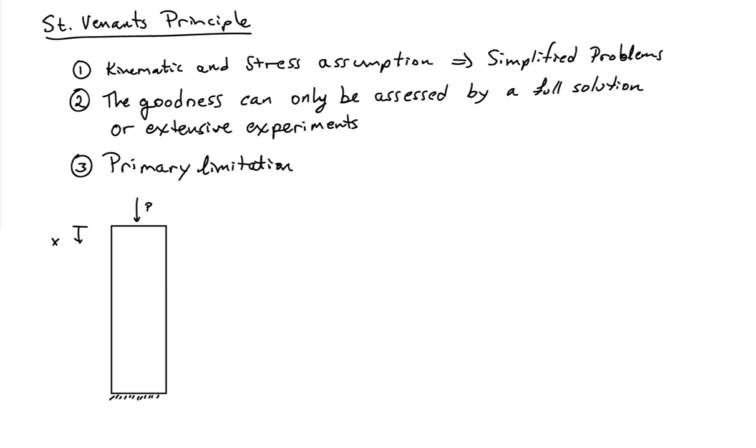And it's the primary limitation of the type of assumptions that we make. So let me consider a bar that I'm pushing on with a very localized force P at the top. And if I assume that the material is homogeneous, the assumptions that we've been making are that if I make a section cut anywhere along the length of the bar, that I'm going to end up with a uniform state of stress here. So this is my assumption.